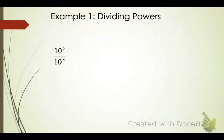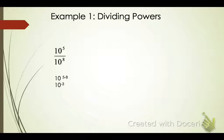Dividing powers. So what would I do here? 10 to the 5th divided by 10 to the 8th — I'm just going to subtract those powers and I get 10 to the negative 3rd power. What if I have x to the 7th over x to the 5th? I'm going to do the same thing — just subtract my exponents. So my answer should be x squared.